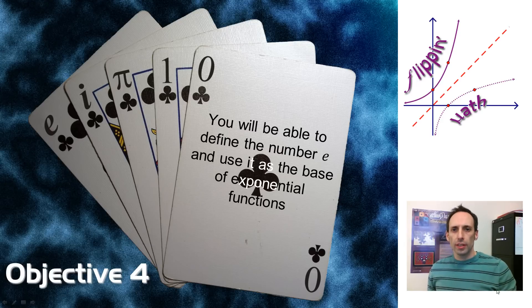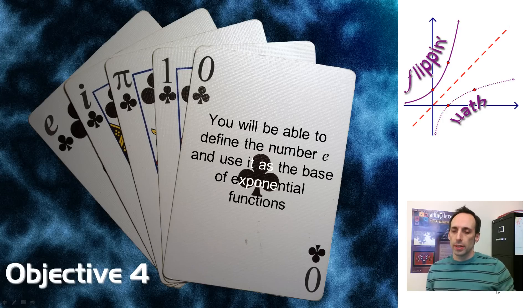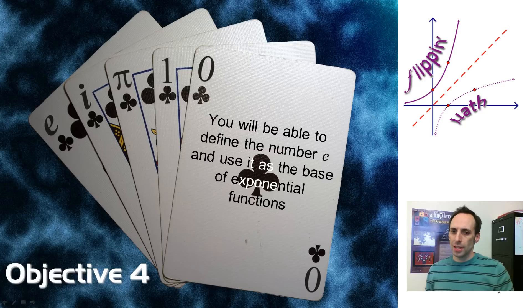Have you ever had a deck of cards that look like that? Look at this, you got the E card, the I card, PI, 1 and 0. Hmm, I wonder what that is. Full house, maybe? I don't know, I'm not a card player, but I'm pretty sure those cards don't look familiar. Especially that E one.